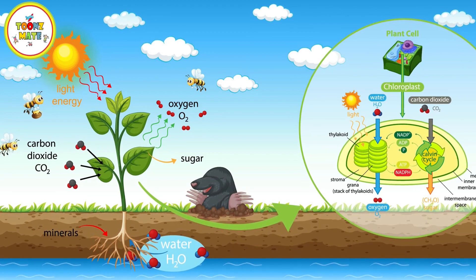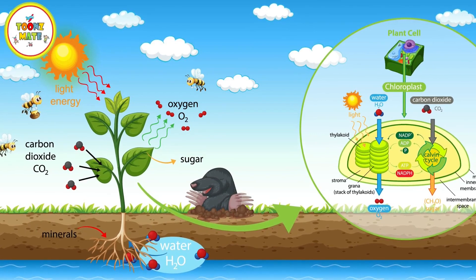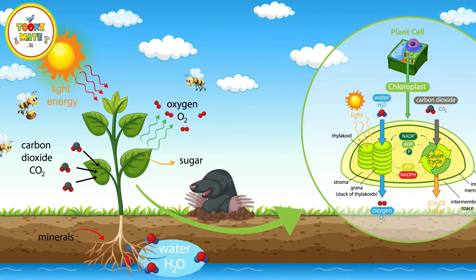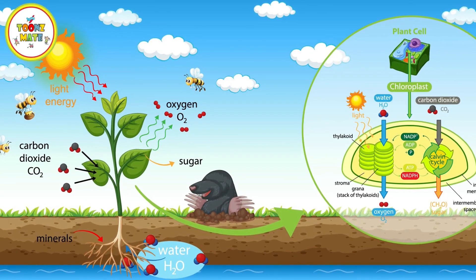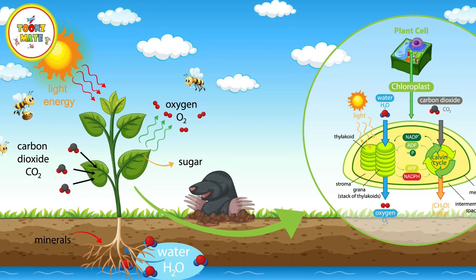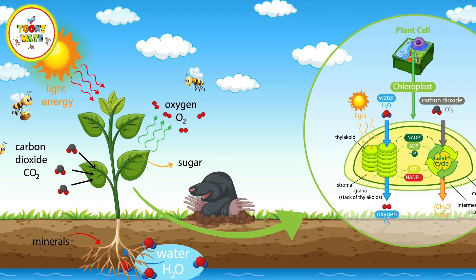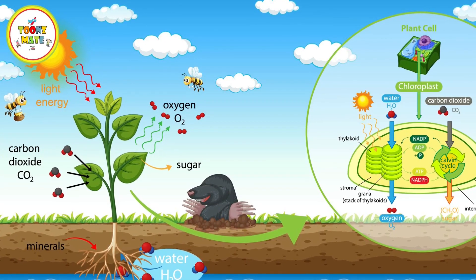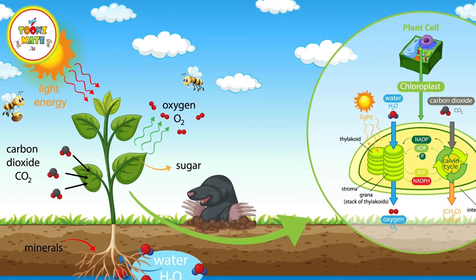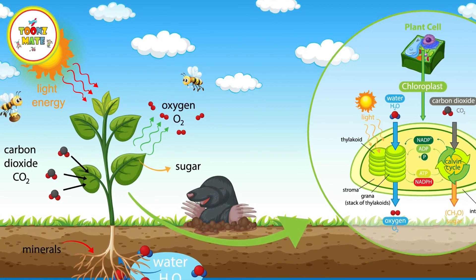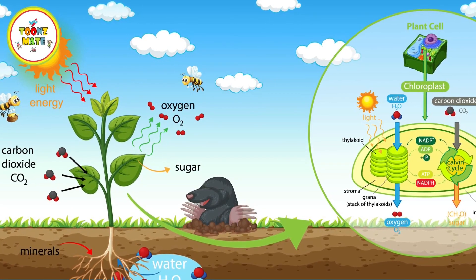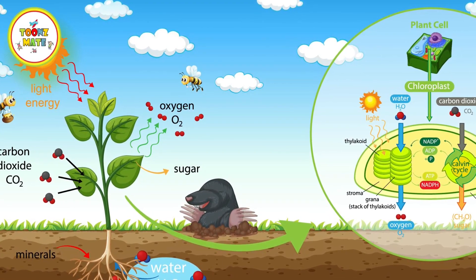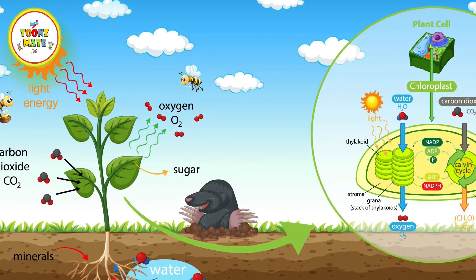The Sun is essential for life on Earth. It provides the energy necessary for photosynthesis in plants, which is the basis of the food chain. It also helps regulate Earth's climate and seasons.